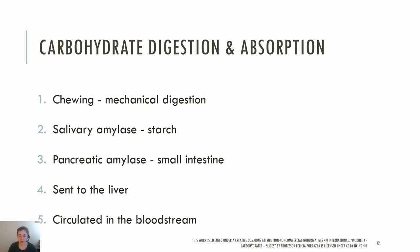By the end of enzymatic digestion, we're left with three monosaccharides: glucose, fructose, and galactose. Fructose and galactose are converted to glucose in the liver. Once absorbed, carbohydrates pass through the liver. Glucose is the main form of carbohydrates circulating in the bloodstream. Any excess glucose will either be stored as glycogen in the liver or converted to body fat. Any indigestible carbohydrates will pass into the large intestine where they are fermented by bacteria into acids and gas, and fermentation produces short-chain fatty acids which our large intestine cells can use as an energy source.